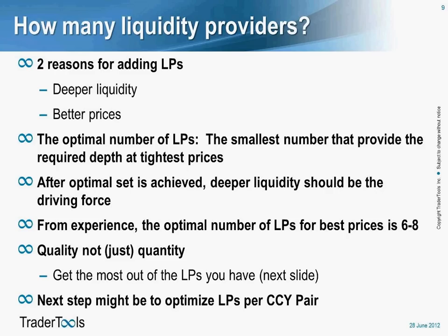Anything beyond what you need for your liquidity requirements is beyond the optimal amount for your aggregator. From our experience, the optimal number of liquidity providers for achieving best prices is roughly six to eight — that's just a rule of thumb. Some customers want more, some want less. If you have a requirement for deeper liquidity and are planning on doing sizable volume across all providers, then you should look at more. But the important thing is that quality matters, not just quantity. You want to get the most out of your relationships and not just add providers for the sake of competition.